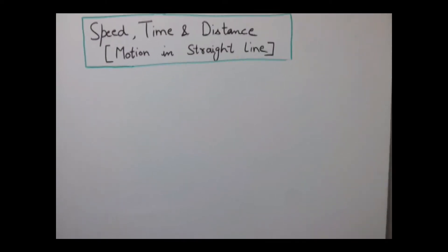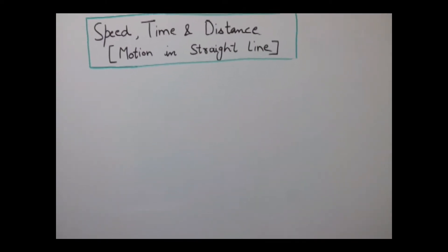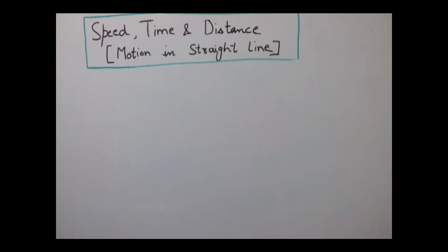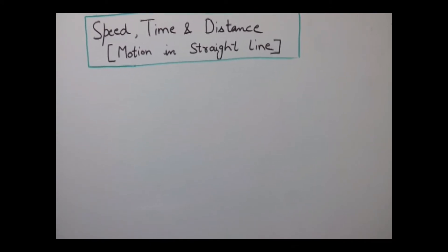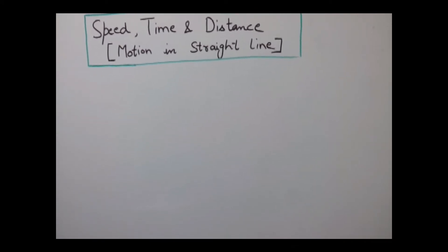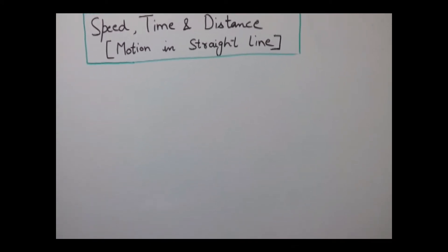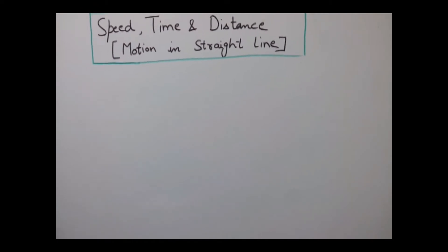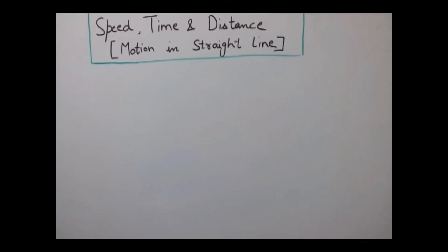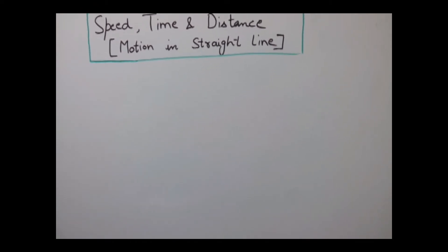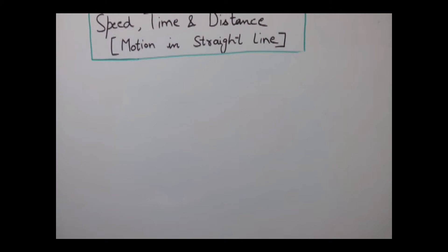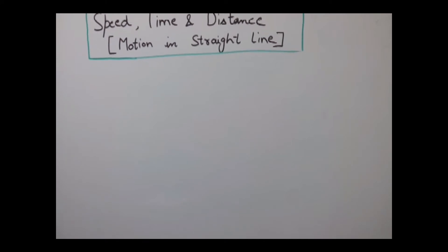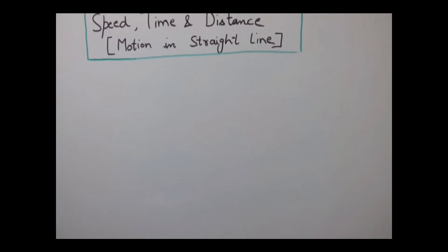When objects travel in a straight line, that is called motion in a straight line. Objects can travel in a straight line in two ways: either the objects can move in the same direction or the objects can move in opposite directions.